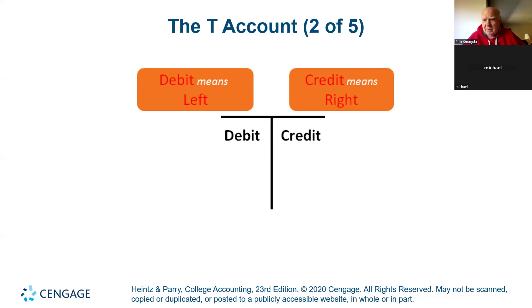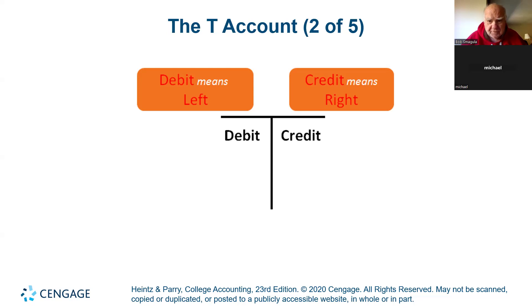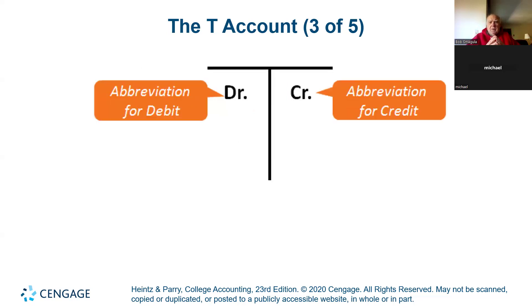Debit's on the left, credit's on the right. I'm going to tell you this stupid joke I always tell — nobody laughs at it. There was a guy who worked in accounting for 50 years. When he came to work, he'd open his desk drawer with a key and look at a little post-it note and nod. When he retired, people were curious what was on the note. Debit's on the left, credit's on the right. Hopefully it doesn't take you 50 years to figure that out.